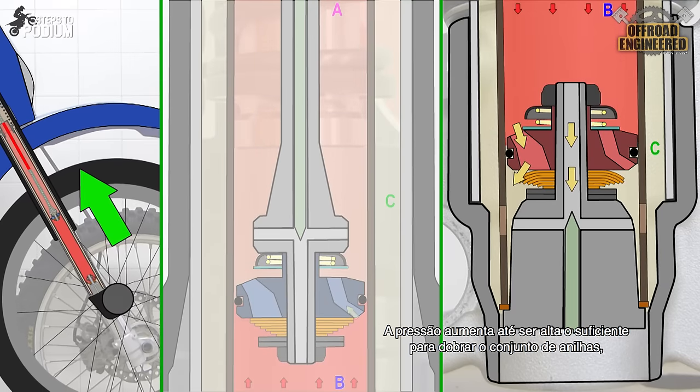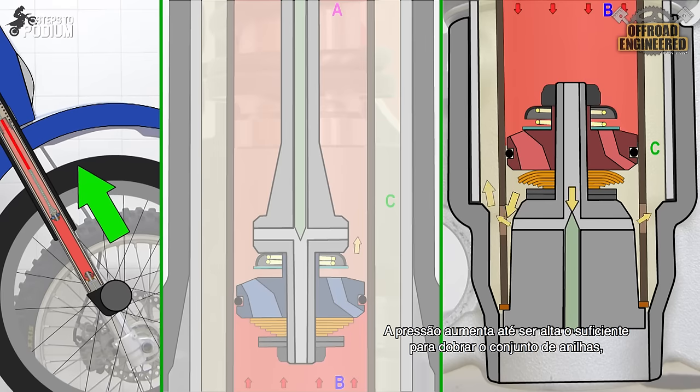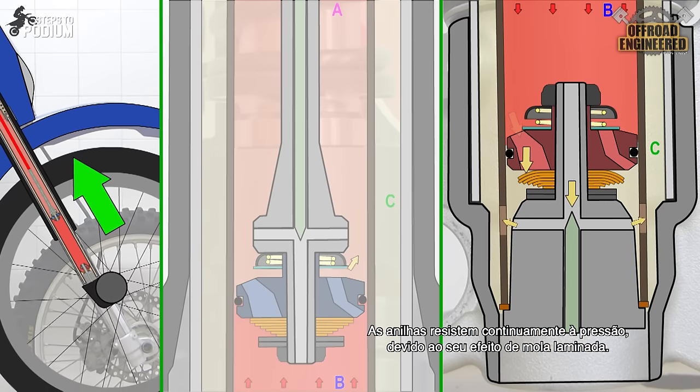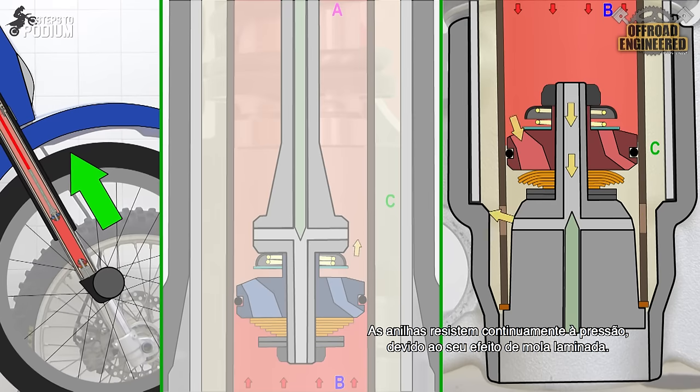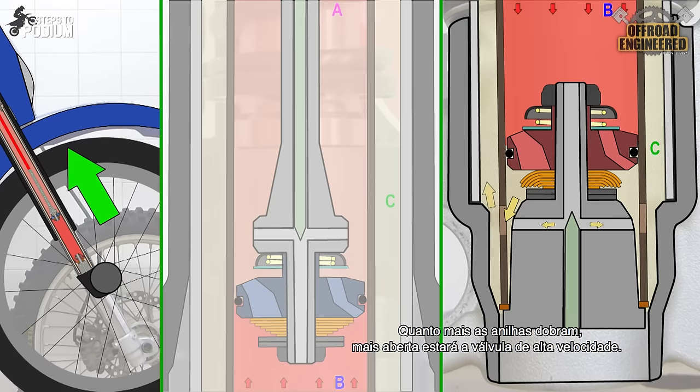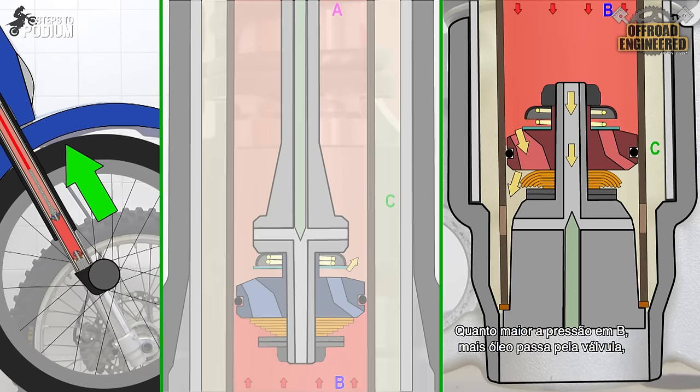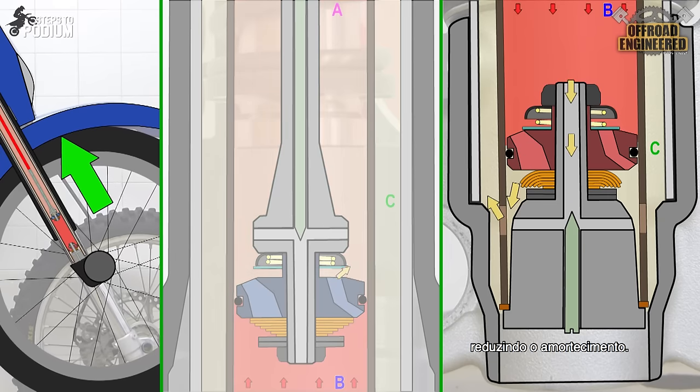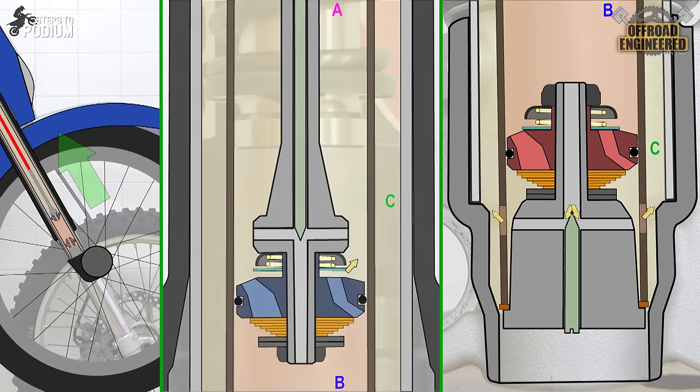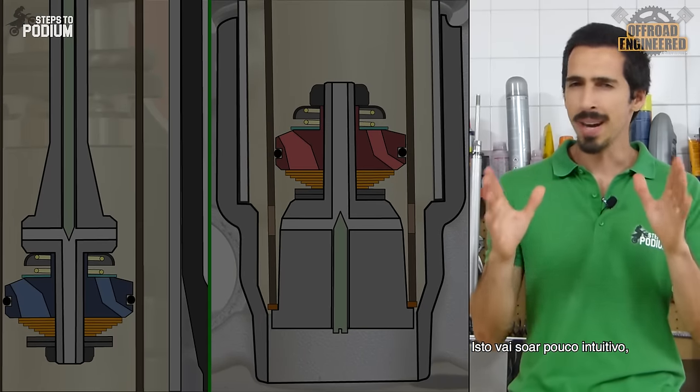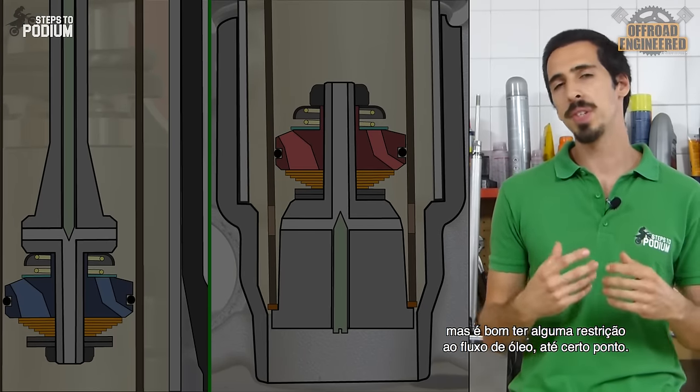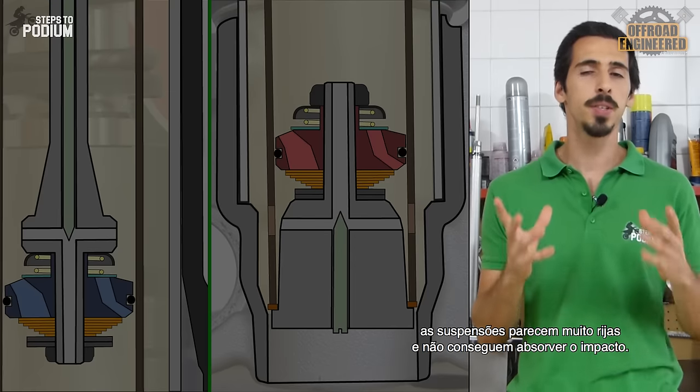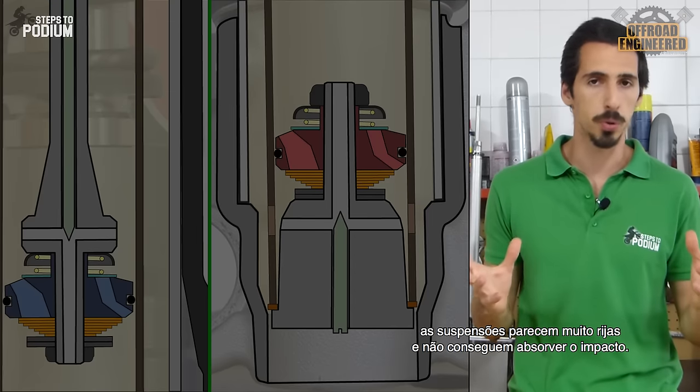The pressure keeps rising until it's high enough to bend the shim stack, allowing more oil to exit the cartridge. The shim stack is continually resisting the bending due to its lift spring effect. The more the shims bend, the more the high-speed valve opens. And the bigger the pressure in B, the more oil can go through the valve and the less damping you have. This might seem counter-intuitive, but the resistance to oil flow is good to a certain degree. If there is too much damping, the suspensions will feel too harsh and won't be able to soak up the bumps.